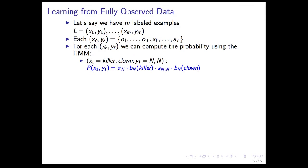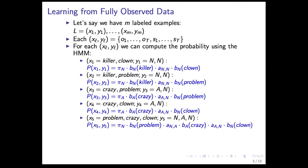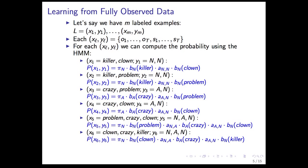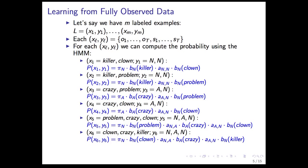We can do the same for the second example, 'killer problem' — exactly the same situation except we generate 'problem' as a noun instead of 'clown.' For an adjective-noun sequence, we start as an adjective, generate 'crazy' as an adjective, go to a noun using transition a sub a,n, and generate 'problem' as a noun. Sequences can be arbitrarily long; the longest here is three. For an n-a-n sequence, we start at n, transition to a, then from a to n, doing all the necessary emissions along the way.